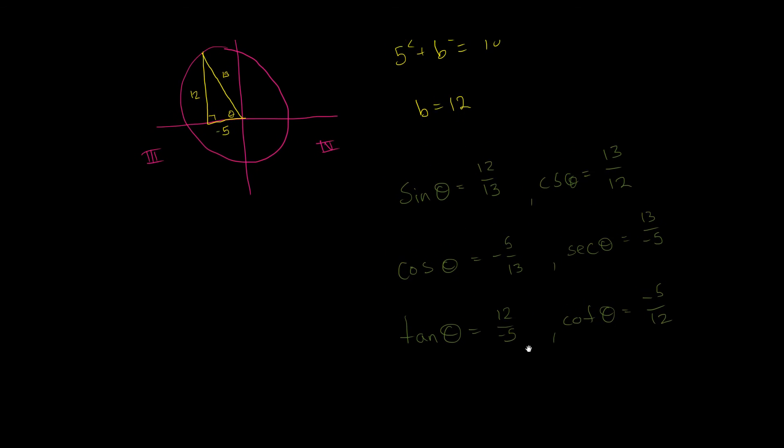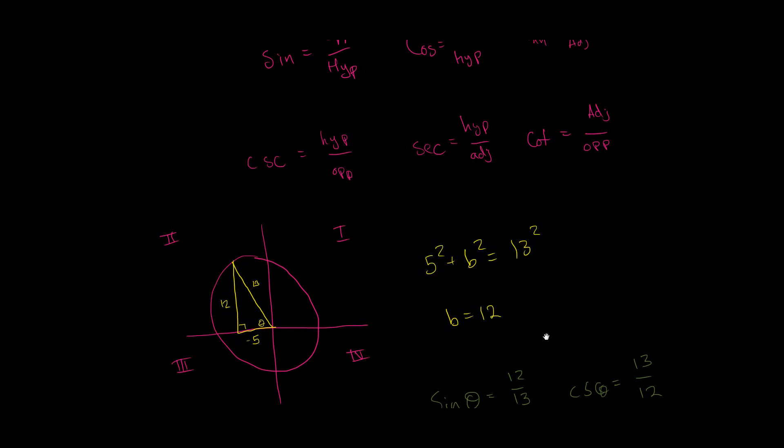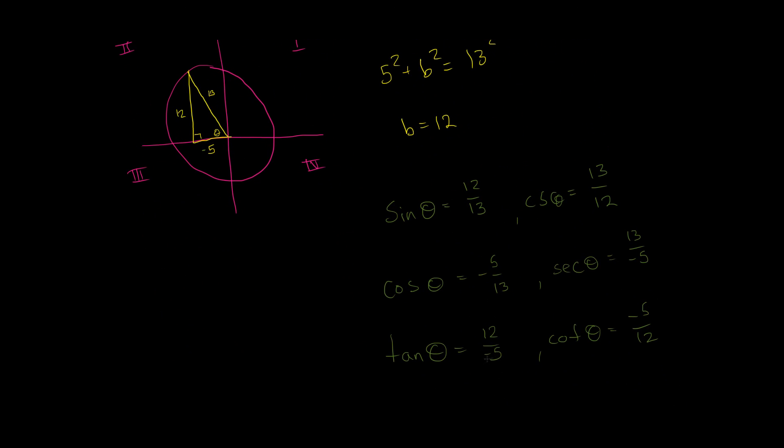So, as you can see, if you know one value, all you have to do is make a triangle, plug the numbers in, use Pythagorean theorem usually to find the third side, and then you just have to plug in based on what's opposite, what's adjacent, and what's hypotenuse, and you can find every other trig function. So, I hope this video helped. If there's any questions, let me know. And, as always, happy studying.